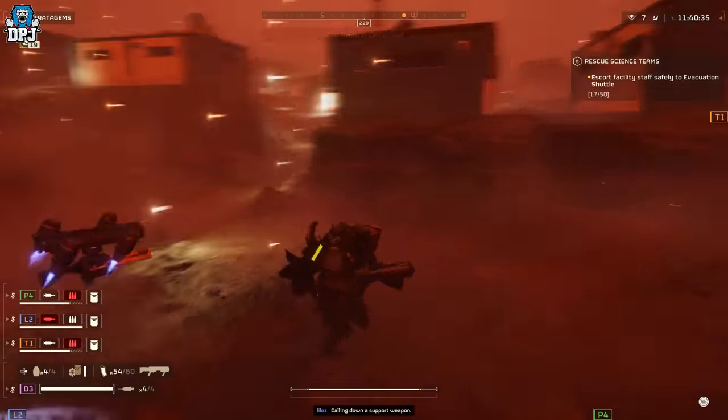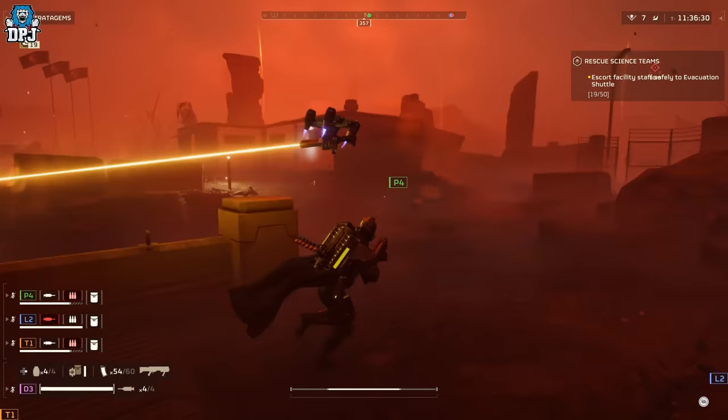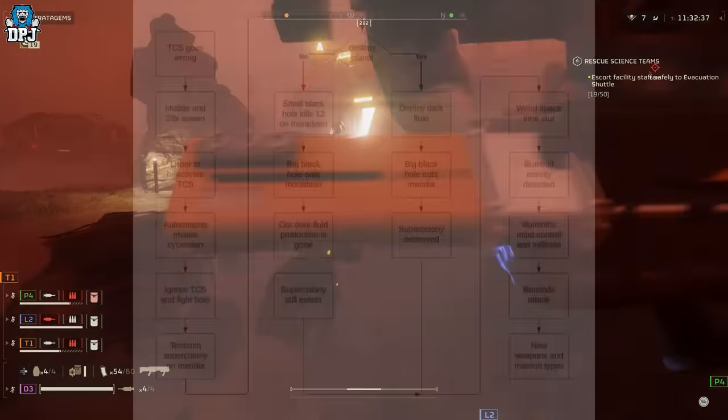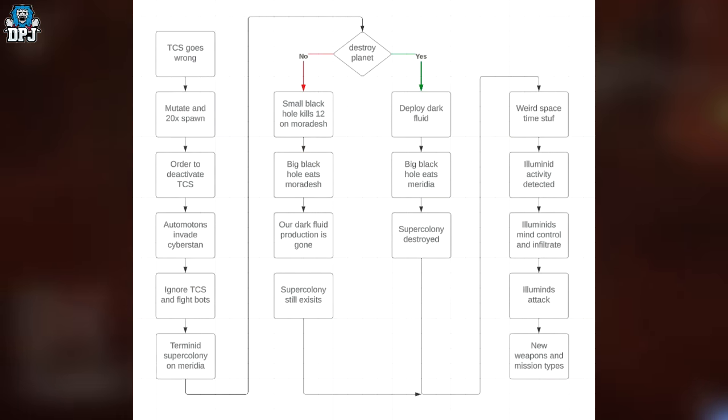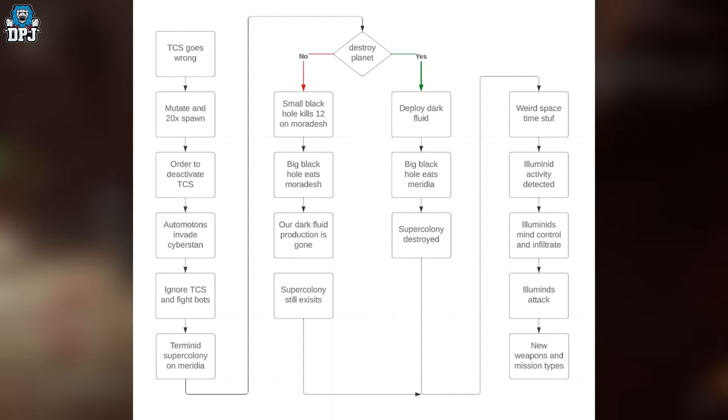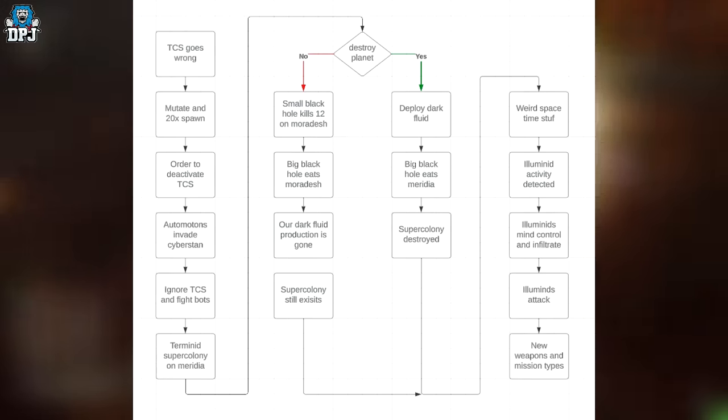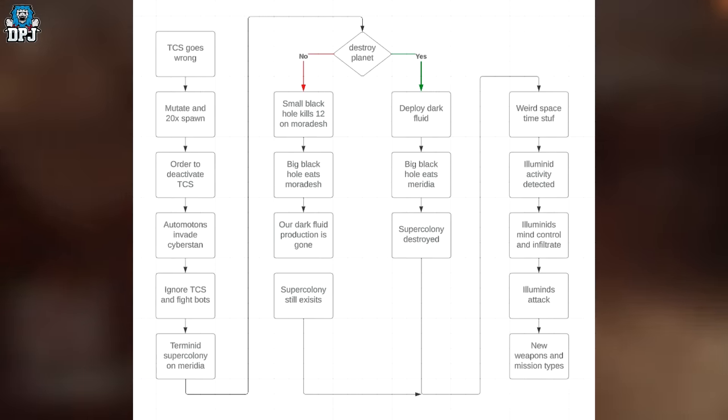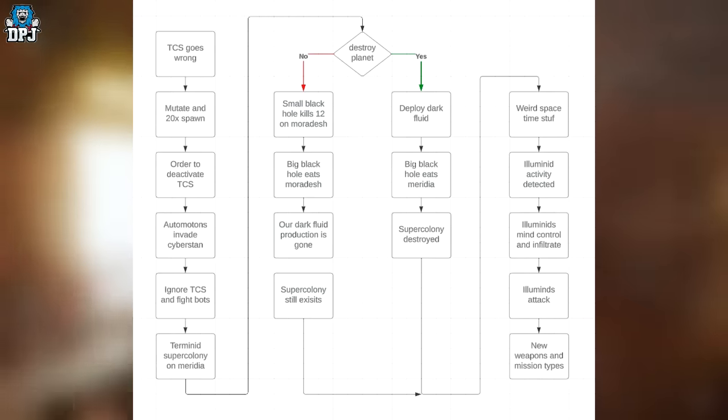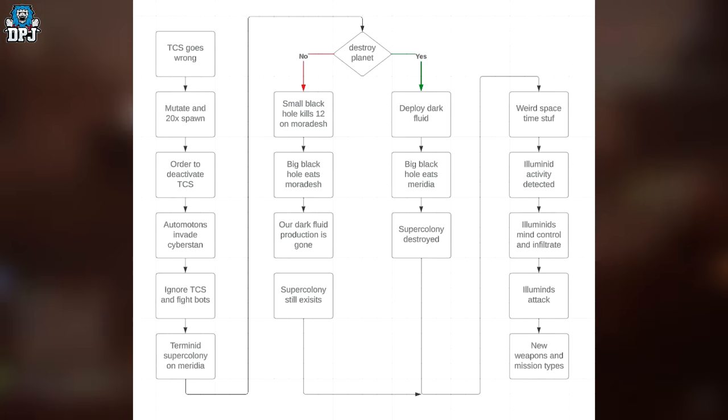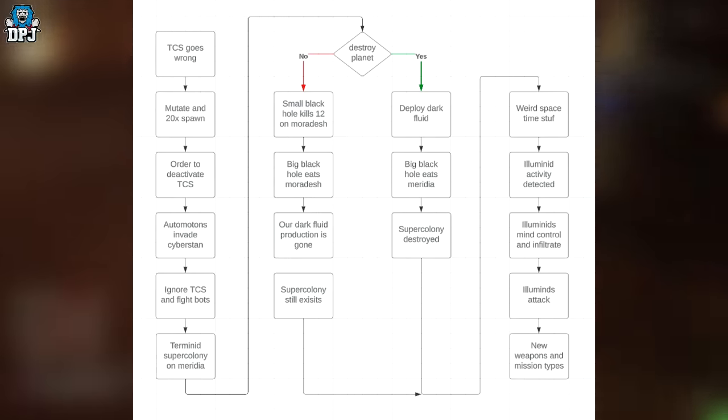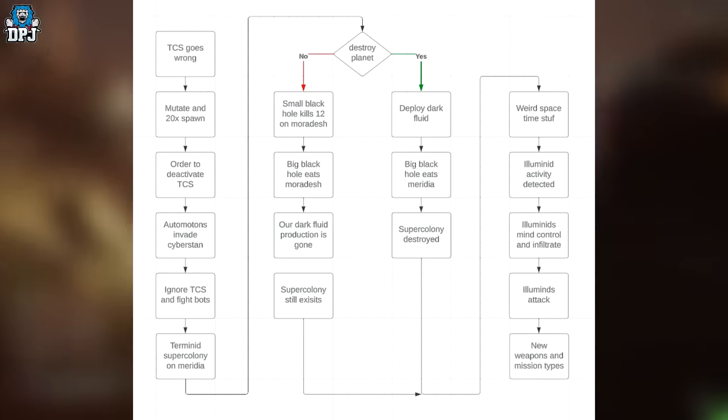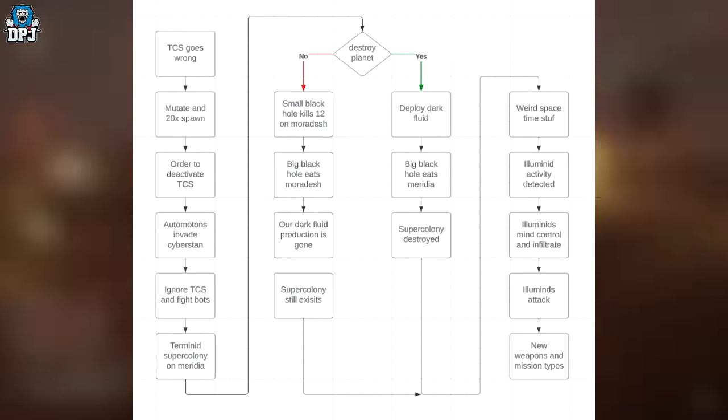About a month ago now we got this lore prediction based on what we know and what's been datamined. This was put together by I believe Scissors280 over on the Helldivers Leaks Reddit. But slowly as time has gone on, this thing has looked more and more accurate and you're seeing it on screen now. We can see where it started on the left-hand side, and as we come down we come to the Automatons invade Cyberstan, ignore TCS and fight bots, and then we have terminate super colony on Meridia, which is where we are at right now.